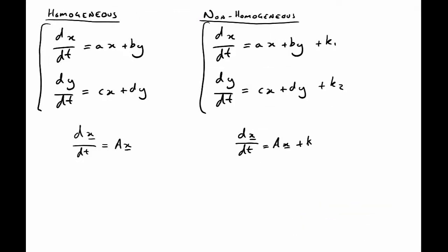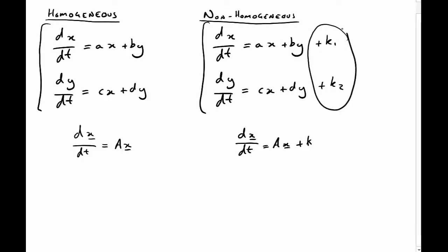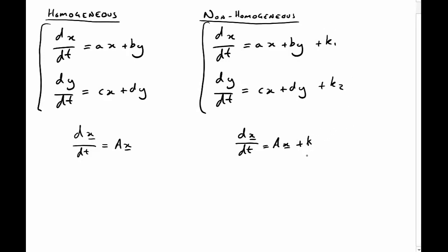In this video we're moving on to the next stage, looking at the non-homogeneous case. Up until now we've looked at the homogeneous case, where there are no constants at the end and we can collapse the system down. Now we're going to look at the non-homogeneous case, where we have these constants hanging around at the end, corresponding to a constant vector when we collapse the system down.